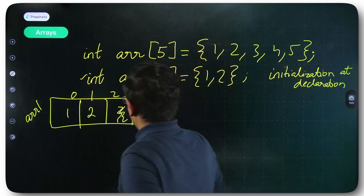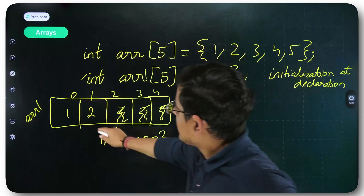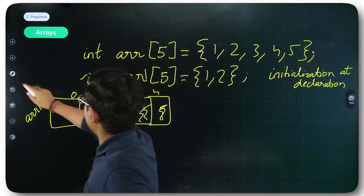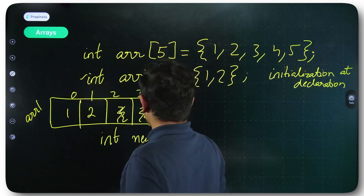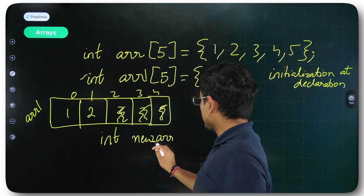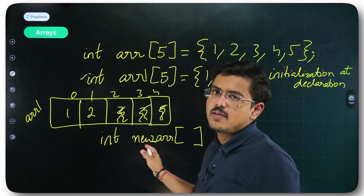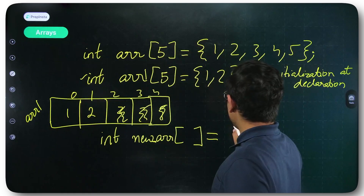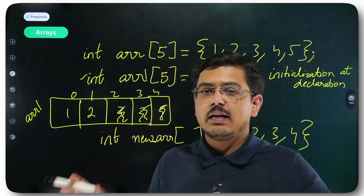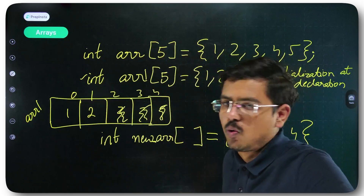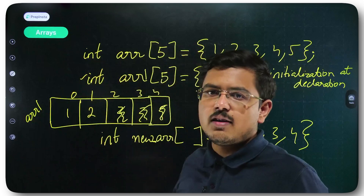There is one more method: you don't specify the size of the array. For example, int new_array[] — without declaring its size, you simply put in four values inside the curly braces. Automatically, a contiguous memory location is created where those four values are stored. This is another simple way of declaring and initializing arrays. So in these three ways you can declare your array.